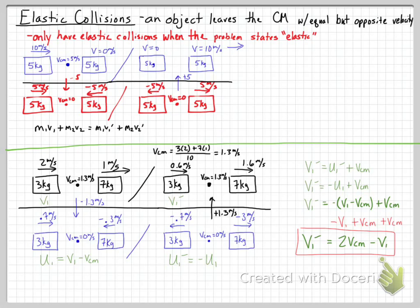Today in class we went around in circles and had some confusion, but the velocity of center of mass is conserved in all collisions. Taking it down to zero allows us to work things out more quickly, and writing the derived equation helps as well. Hopefully this helps you out.